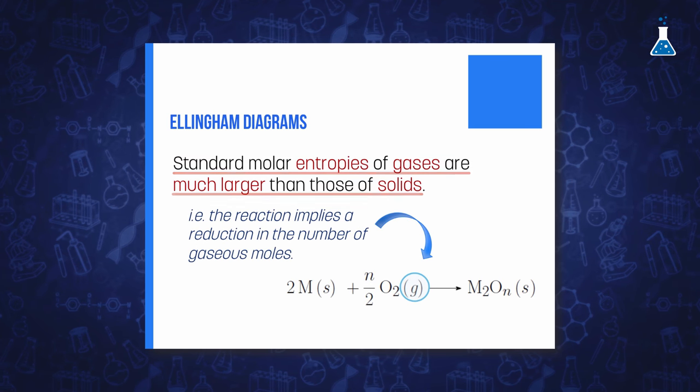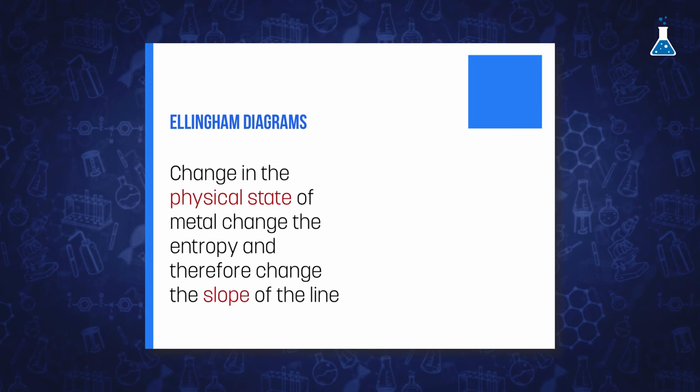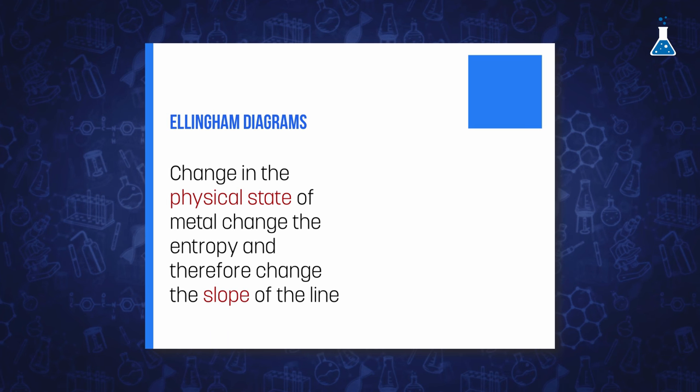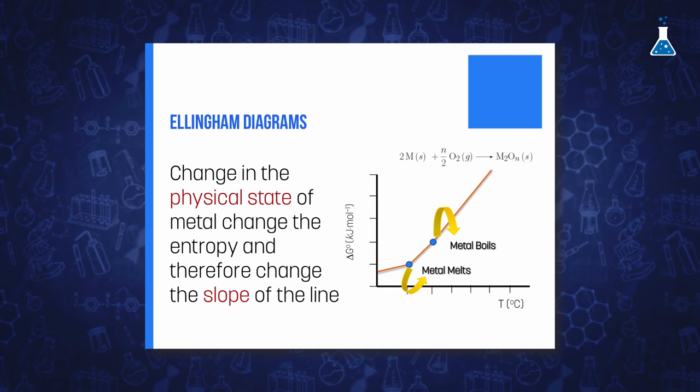This relationship of the slope with the entropy explains the changes in the slope for a same reaction when the temperature is increasing. Obviously, if there is a change in the state of the metal because it melts or vaporizes, the slope will change due to the fact that the entropy of each state is also different.